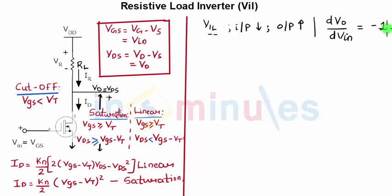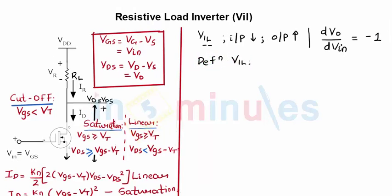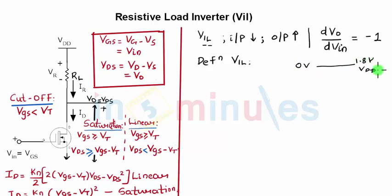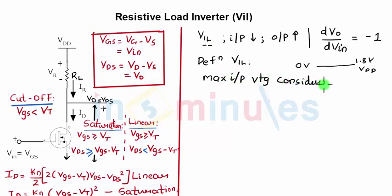One very important thing you need to keep in mind is the definition of VIL. Let's assume that ground is at 0 volts and VDD is 1.8 volts. The definition of VIL — input low — is the maximum input voltage which can be considered as logic zero.